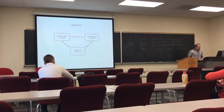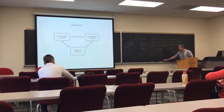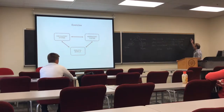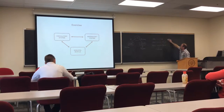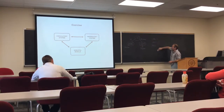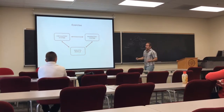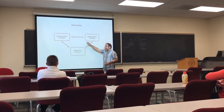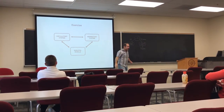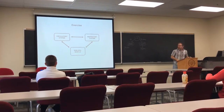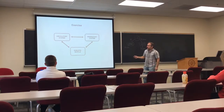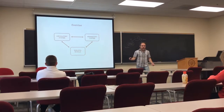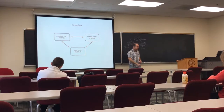Exercise involves the activation of different systems in the body, and they have to interact to produce, basically, muscle contraction — that's what exercise is all about. We're going to talk about the circulatory system, the respiratory system, and skeletal muscles, which are the main systems involved in exercise.